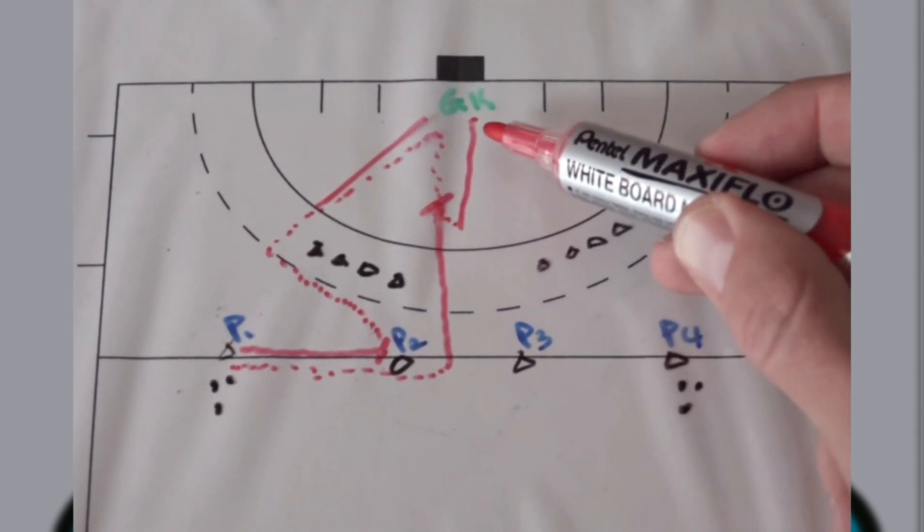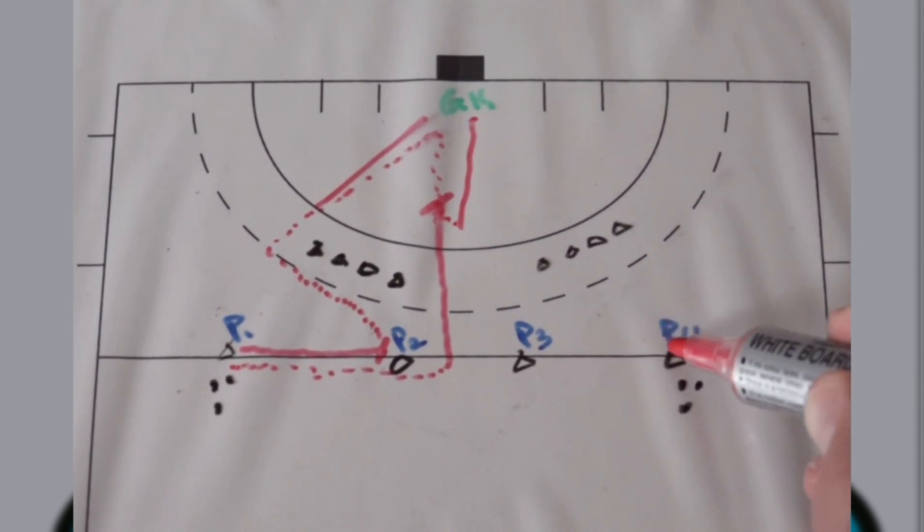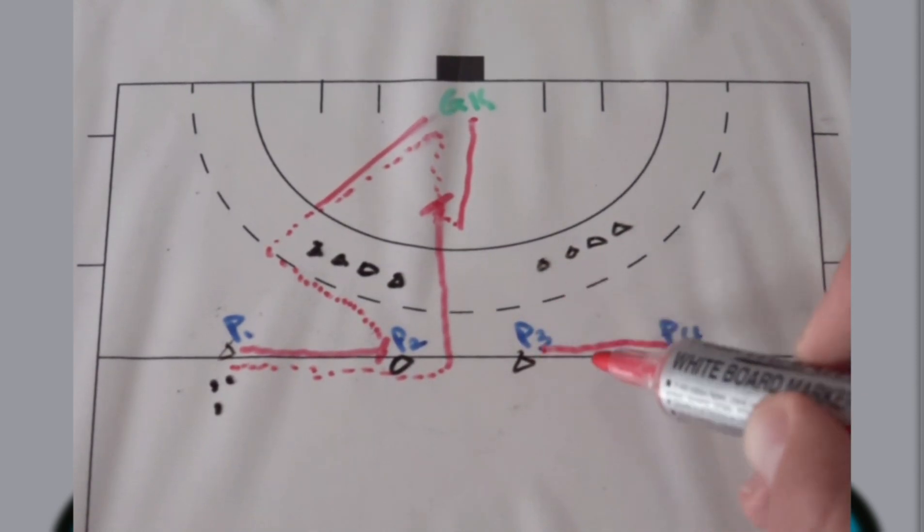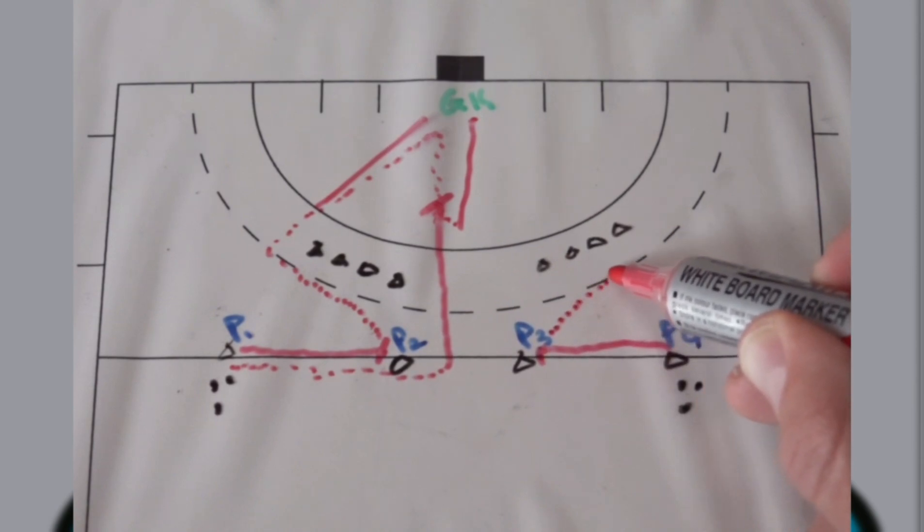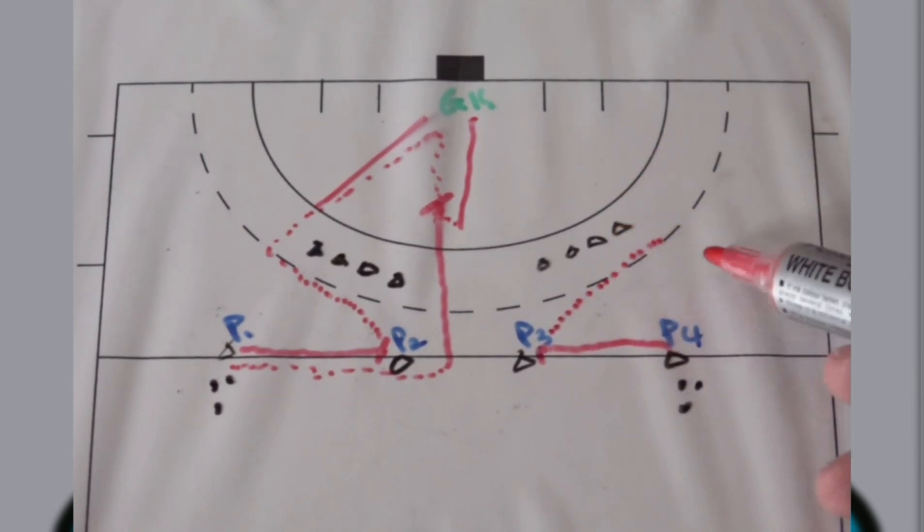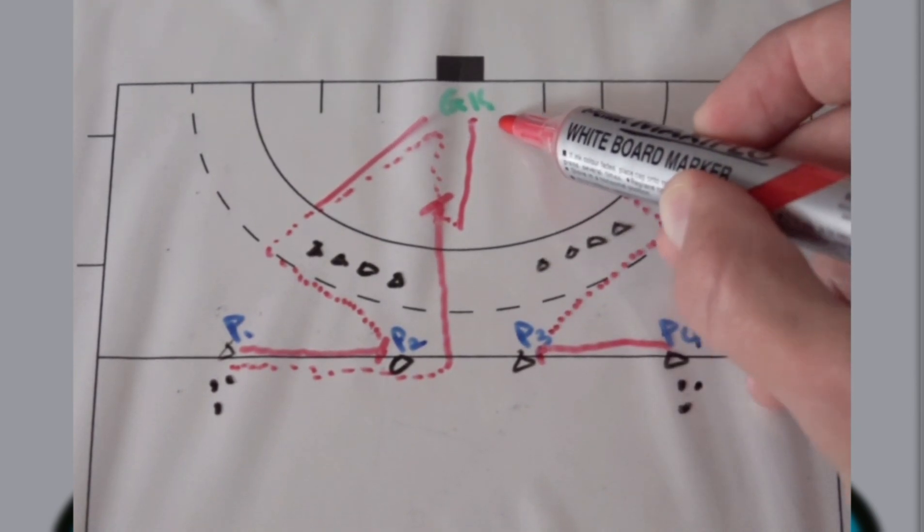As soon as this shot has been taken in the backspace, player four will pass the ball to player three. They will receive, dribble against the grain into the space, get around the cones, go towards the circle and then take a strong stick shot.